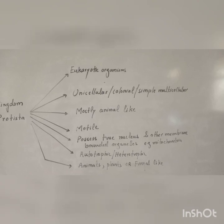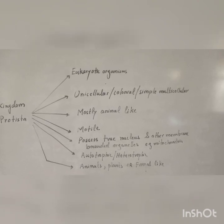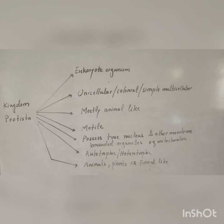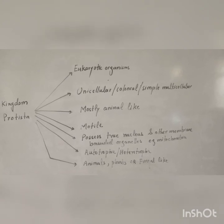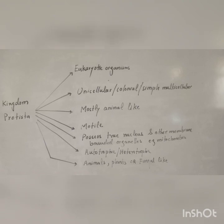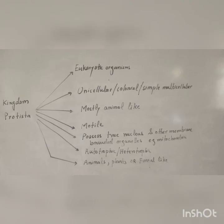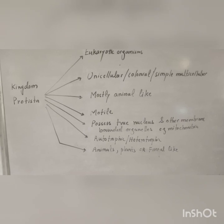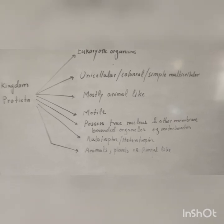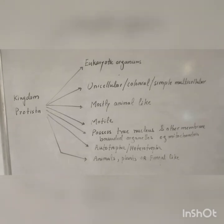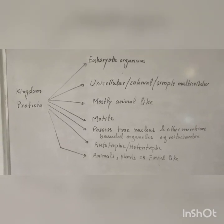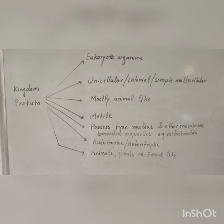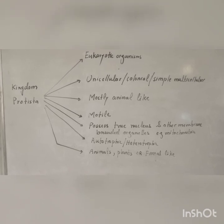Organisms in Kingdom Protista are mostly animal-like and motile, meaning locomotory organs are present. They possess a true nucleus and other membrane-bounded organelles such as mitochondria. They may be autotrophic or heterotrophic, and they may resemble animals, plants, or fungi in their characteristics.